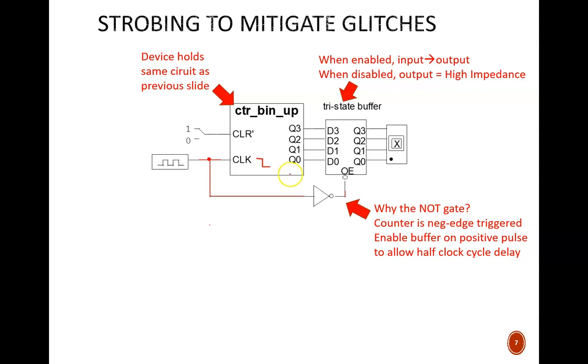So, we enable the buffer to output data when the clock is high. This buffer device happens to have an active low enable, so the NOT gate flips that around to active high. If this enable port didn't have the bubble, we could simply wire the clock directly to the port without any gates.